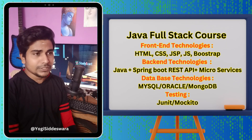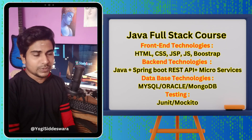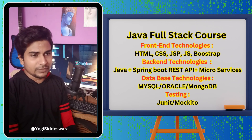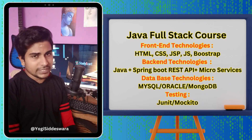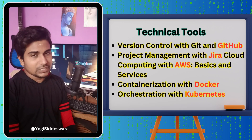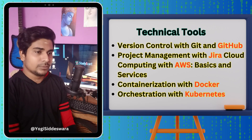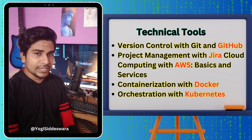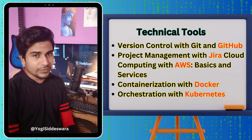About the course — this is a complete Java full stack development course, meaning we are going to discuss front-end technologies, back-end technologies, and database technologies. Along with these, we are also going to cover tools like Jira, GitHub, Docker, Kubernetes, and AWS in this particular course.